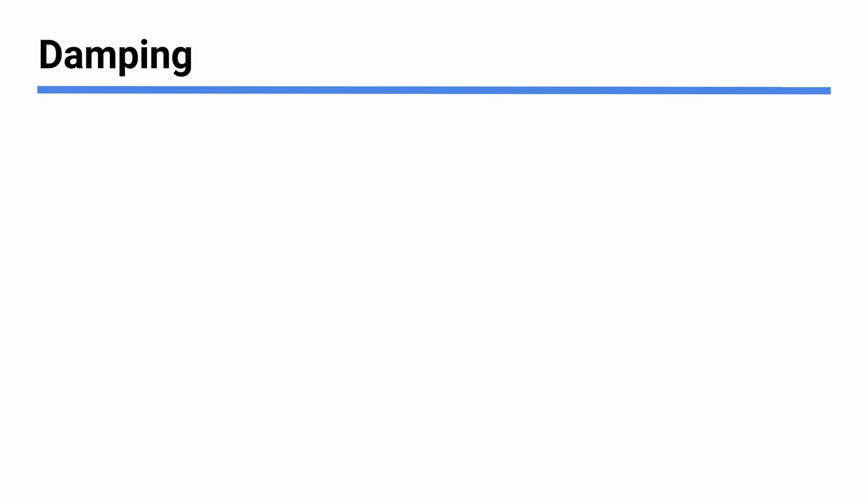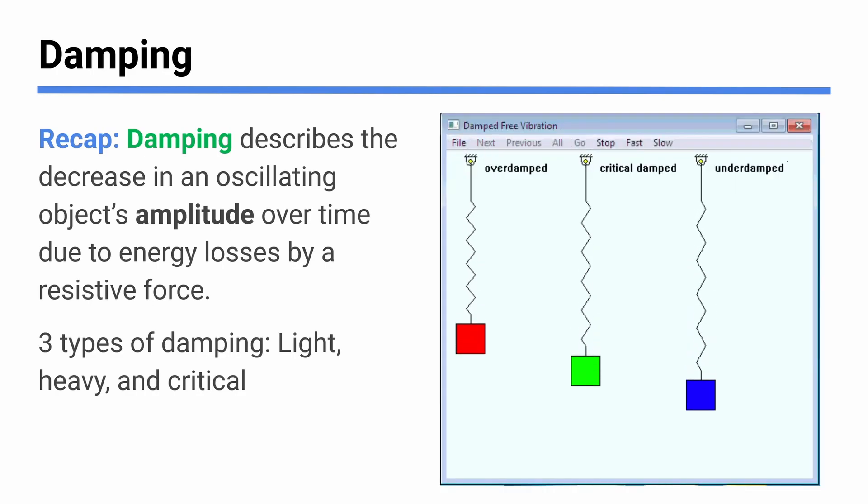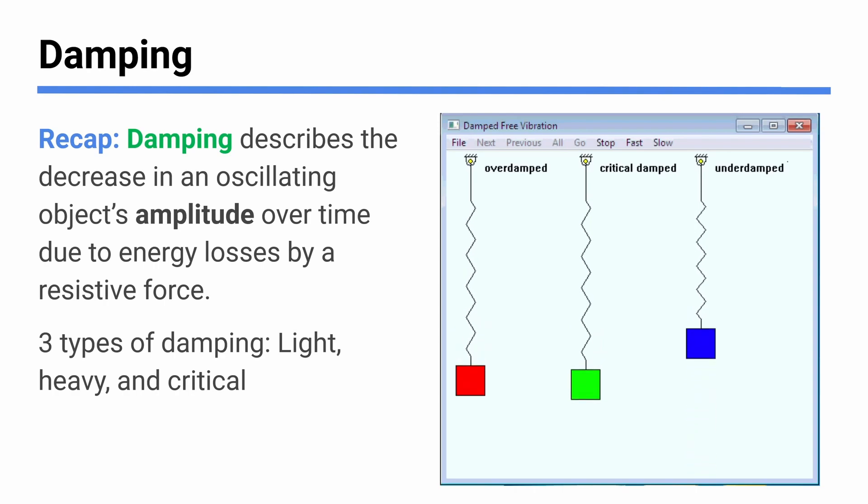The other thing to know in this general topic is damping. We've talked about it a little bit. The idea of damping is that when you have something oscillating — say the mass on a spring — the amplitude will tend to decrease over time in real life because of resistive forces like air resistance. What we'll add here is there are some specific types: light damping, heavy damping, and critical damping — and you'll often see the latter two called underdamped and overdamped instead of light and heavy.